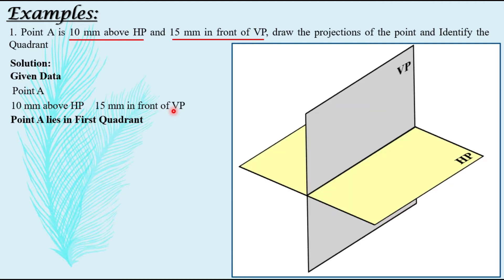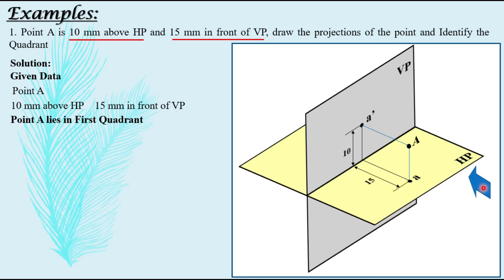Now let us see how it will look in the three-dimensional view. This is the four-quadrant system and we are looking from this side. Point A will have its front view above the XY line as it is in the first quadrant, and the top view will be on the horizontal plane obtained below XY. The corresponding distances are 10 mm above HP and 15 mm in front of VP.